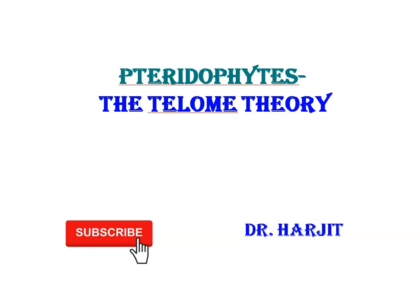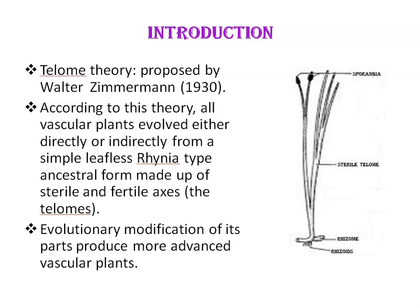Today's topic is Rhodophytes, and in this class we'll be discussing the telome theory. Telome theory was proposed by Walter Zimmerman in the 1930s and has been widely accepted for over 70 years as the leading explanation for evolutionary innovation. According to telome theory, all vascular plants evolved either directly or indirectly from a simple leafless rhynia-type ancestral form made up of sterile and fertile axes — the telomes.